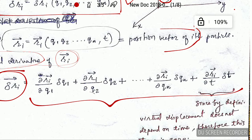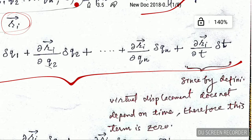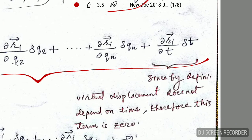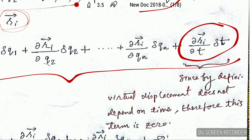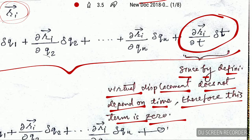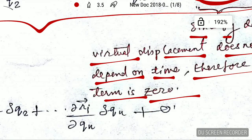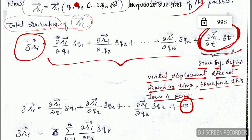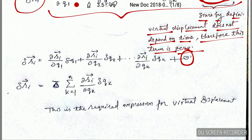The total derivative has been taken. Now, for the last term: by definition, virtual displacement does not depend on time, therefore this term is zero. Since virtual displacement does not change with time, this term goes to zero, and we are left with the remaining terms only.